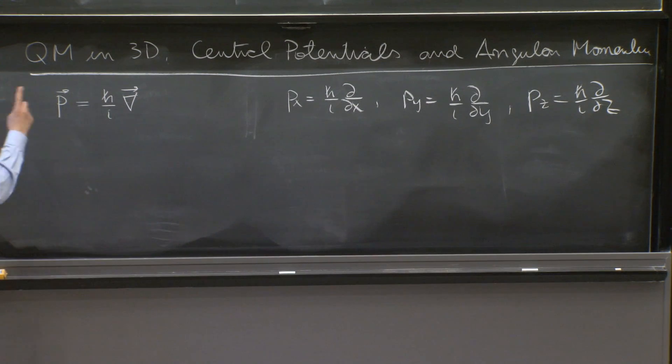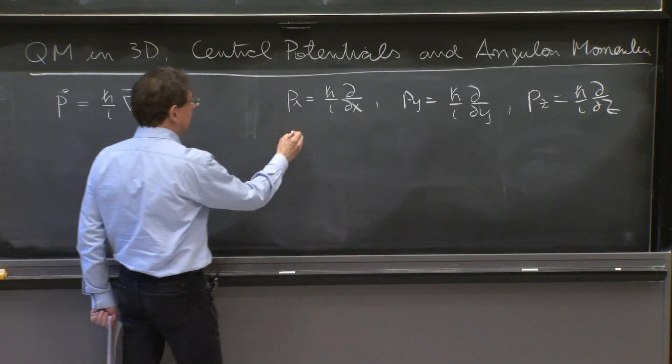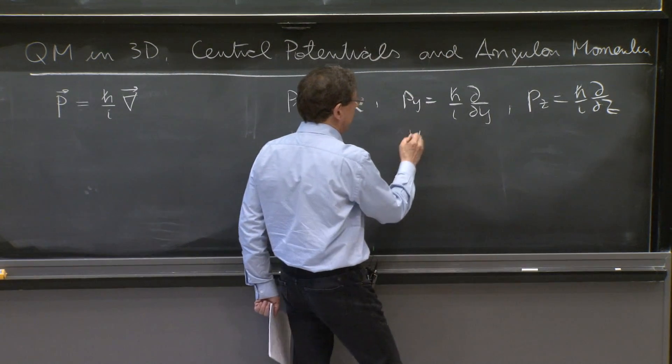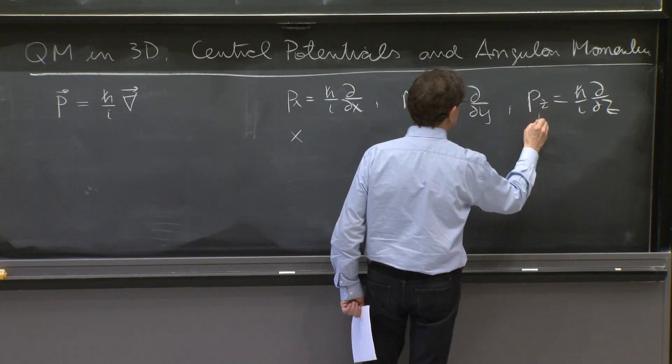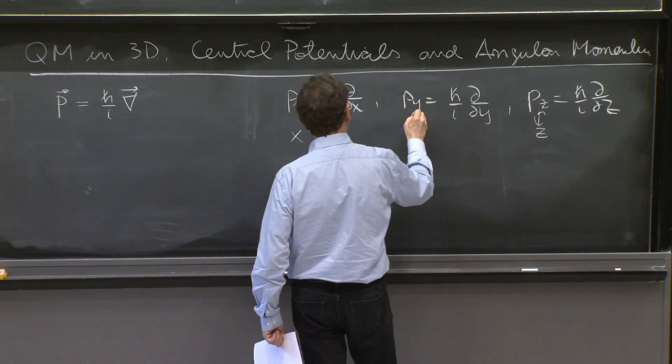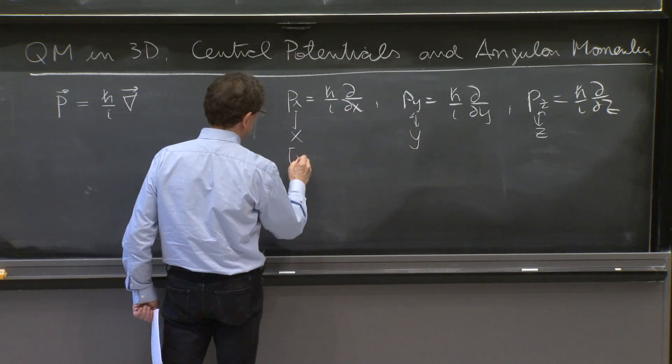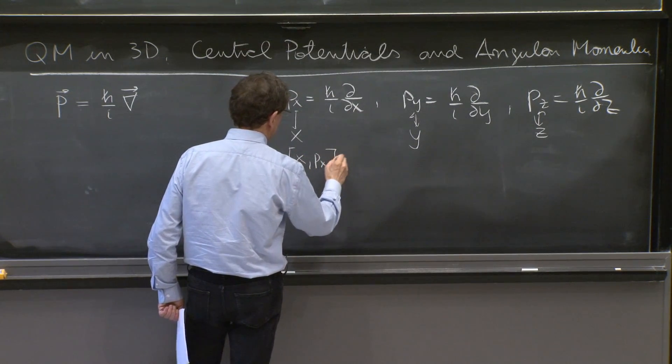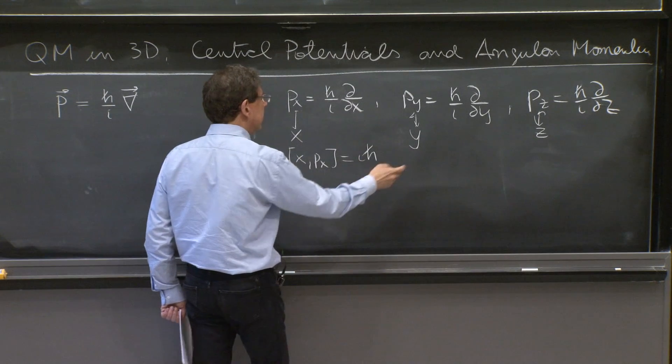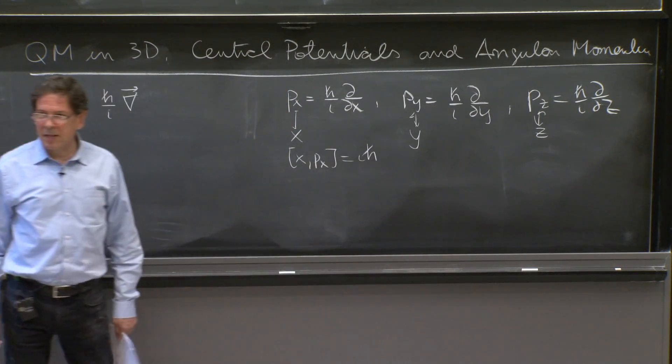And we had commutators between px and x, py and y, and pz and z. There were always the same commutators of the form x px equal i h bar. Similar things here.